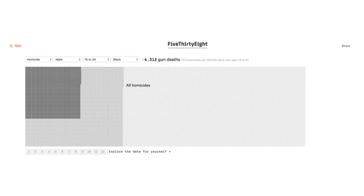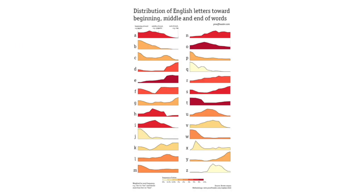It doesn't have to be all serious. Here's a distribution of letters and words: A's are typically at the beginning of words, N's are more toward the end, Y's are almost always at the end, Z's are usually toward the end as well. This is a lighthearted way to help tell a story with data.